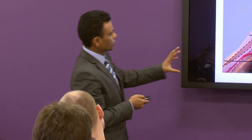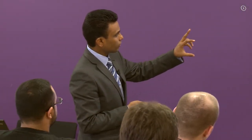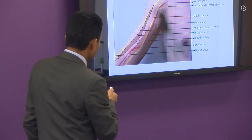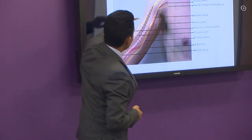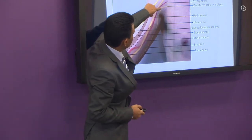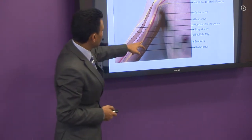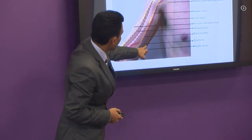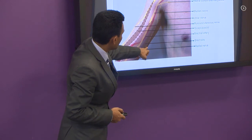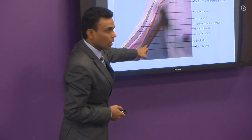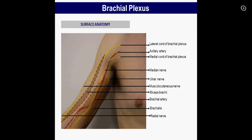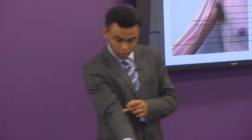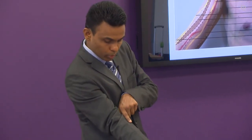Just take a minute to orient yourself. You have the lateral cord of the brachial plexus there, the axillary artery, and the medial cord of the brachial plexus. One anatomical relation they will ask you in the exam: if you go back to the cubital fossa, the most medial structure is the median nerve, and next to that is the brachial artery.